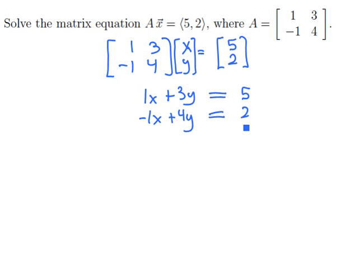This can be solved using our elimination techniques. We'll make the augmented matrix [1, 3 | 5; -1, 4 | 2] and row reduce this.